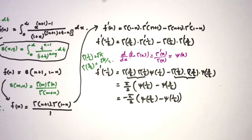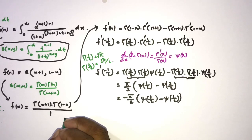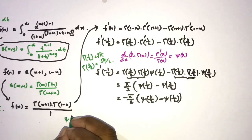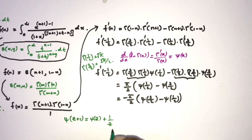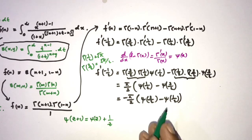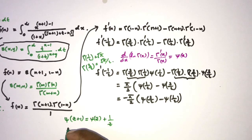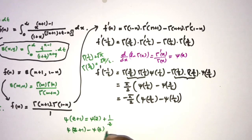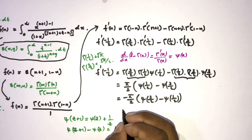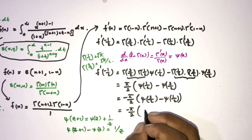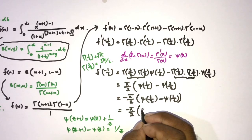Using the digamma recurrence property: psi(c+1) equals psi(c) plus 1/c, so psi(c+1) minus psi(c) equals 1/c. Here, psi(3/2) minus psi(1/2) equals 1/(1/2) equals 2. Therefore f'(−1/2) equals −(π/2) times 2, which equals −π.